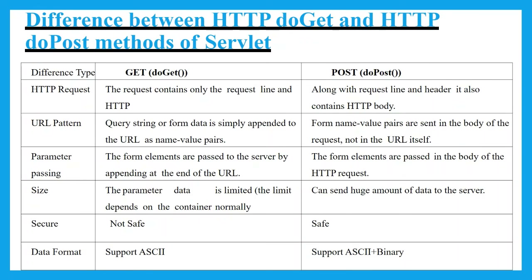Now we discuss the differences between DoGet and DoPost. Regarding HTTP request structure: the DoGet method request contains only the request line and HTTP headers, whereas the DoPost method request contains the request line, headers, and also an HTTP body. Regarding URL pattern: with DoGet, the query string or form data is appended to the URL as name-value pairs — you can see the values on the URL. With DoPost, the form values are sent in the body of the request, not in the URL itself.